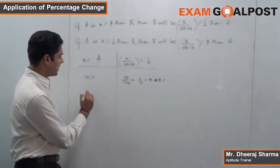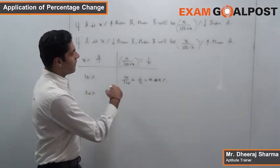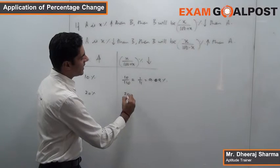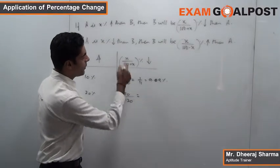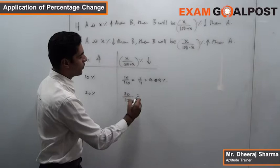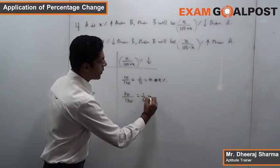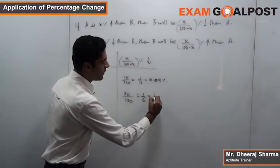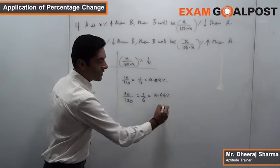Like for example 20 percent. An increase of 20 percent will get compensated by a decrease of 20/120. What I am doing is putting the value of X is 20. So this is 20/120 which is 1/6. If you remember the reciprocal of 1/6, it will come out to be equal to 16.66 percent.